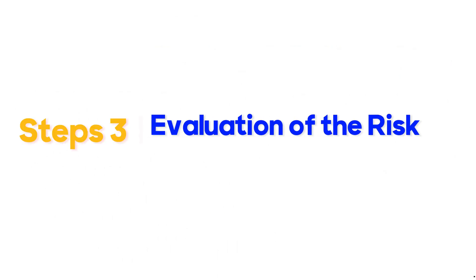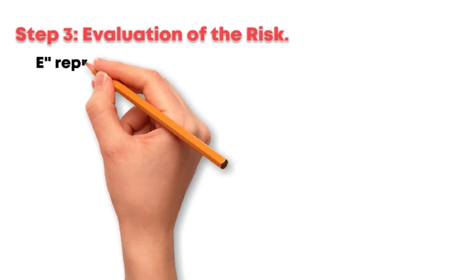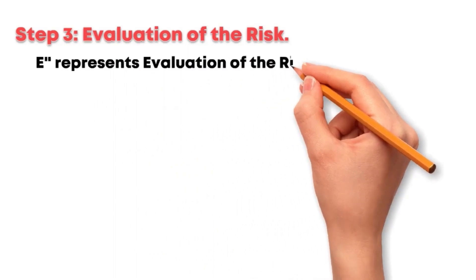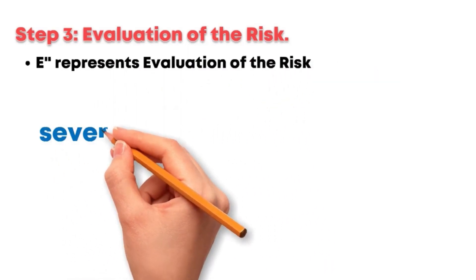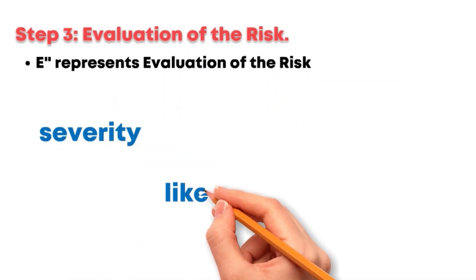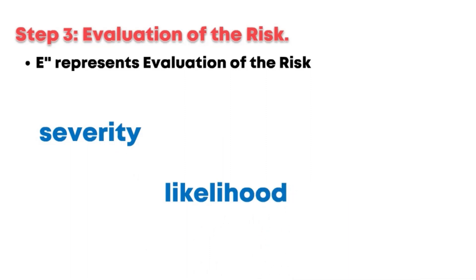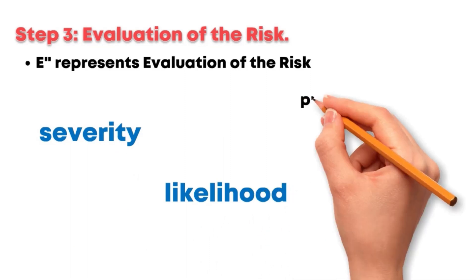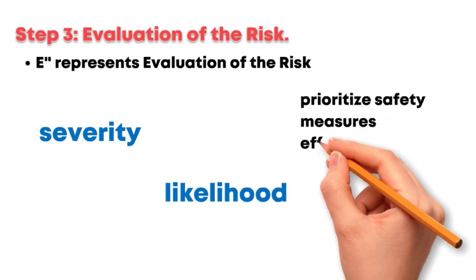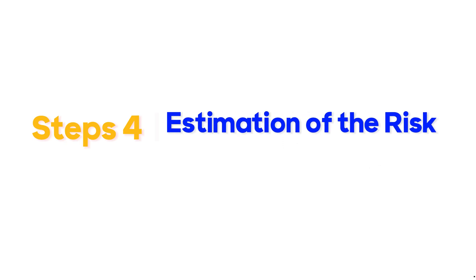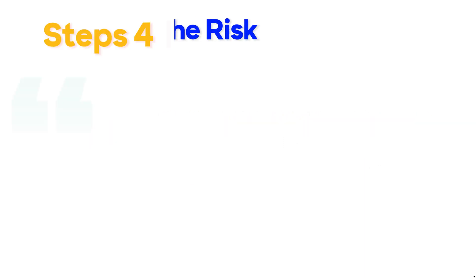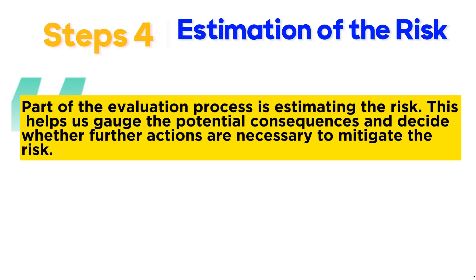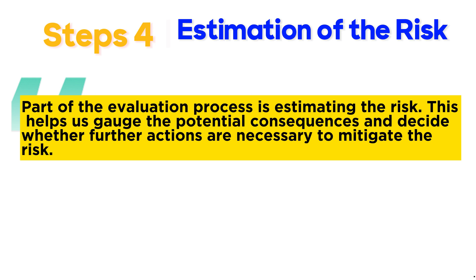Step 3: Evaluation of the risk. E represents evaluation of the risk. Here we assess the severity and likelihood of harm occurring. By understanding the risk's magnitude, we can prioritize safety measures effectively. Step 4: Estimation of the risk. Part of the evaluation process is estimating the risk, which helps us gauge the potential consequences and decide whether further actions are necessary to mitigate the risk.